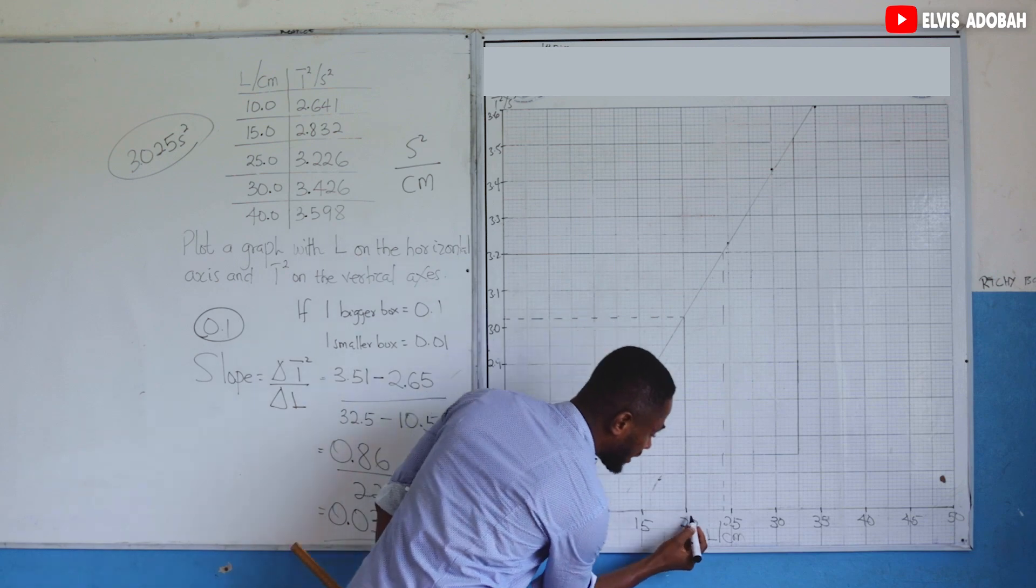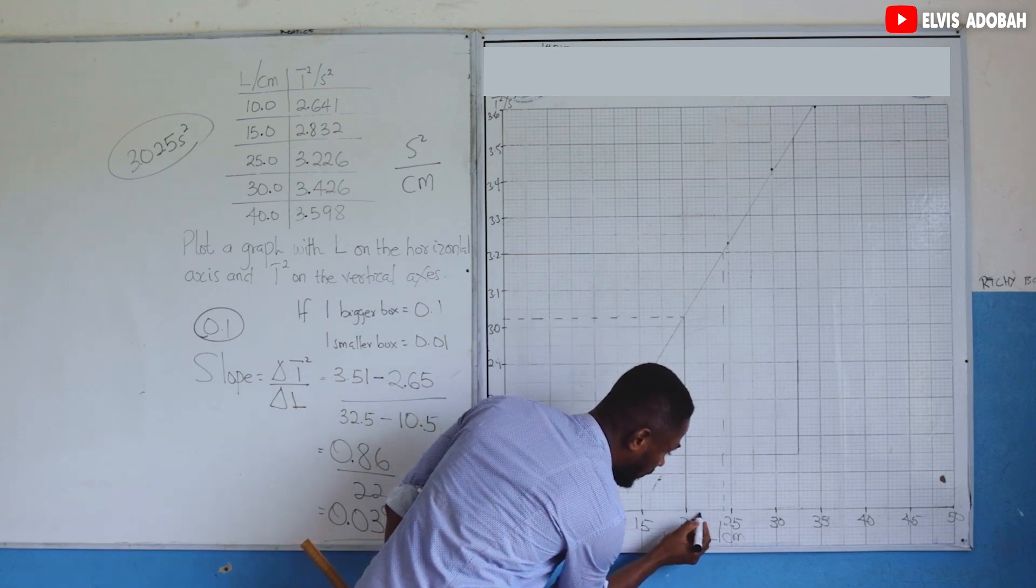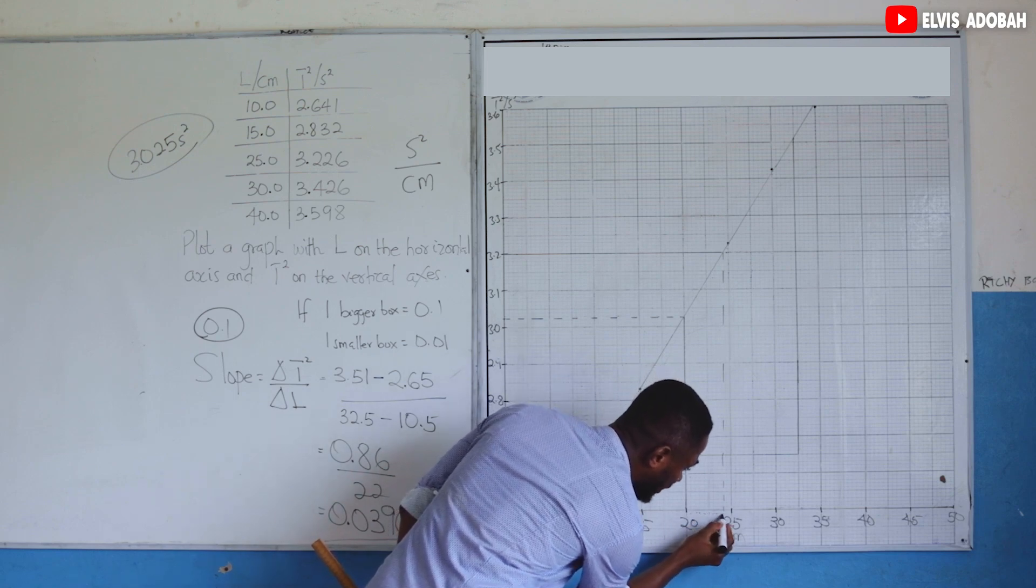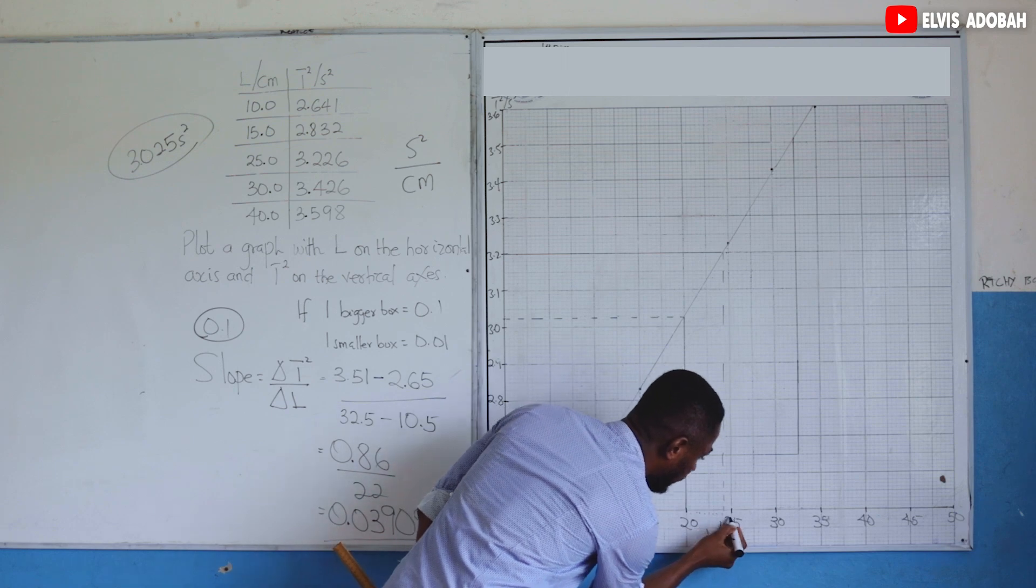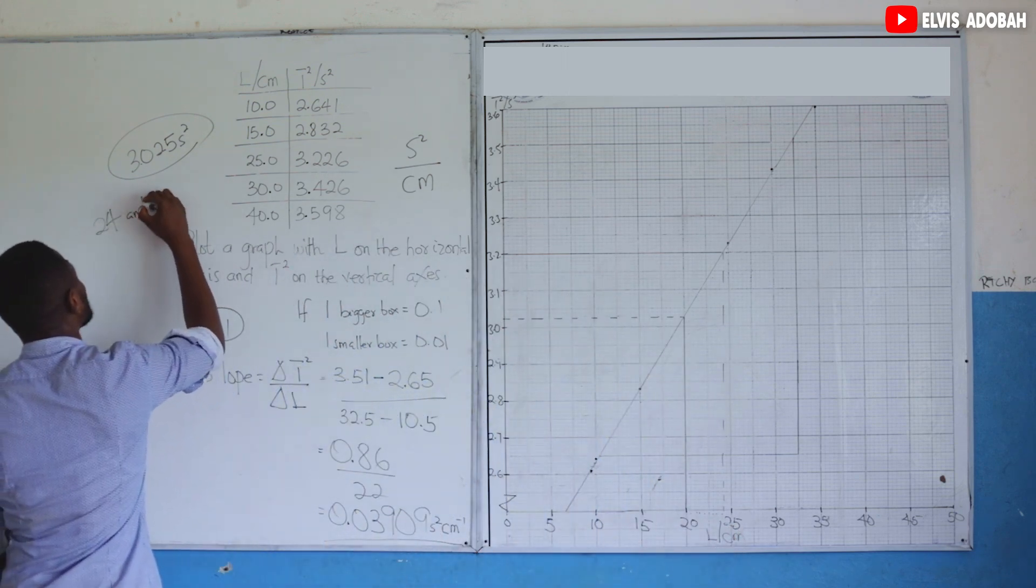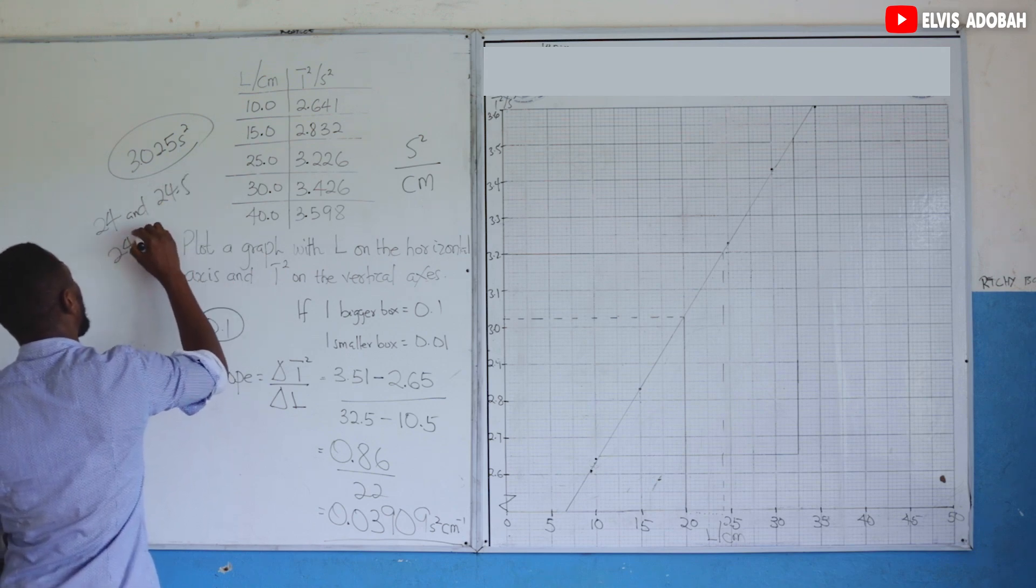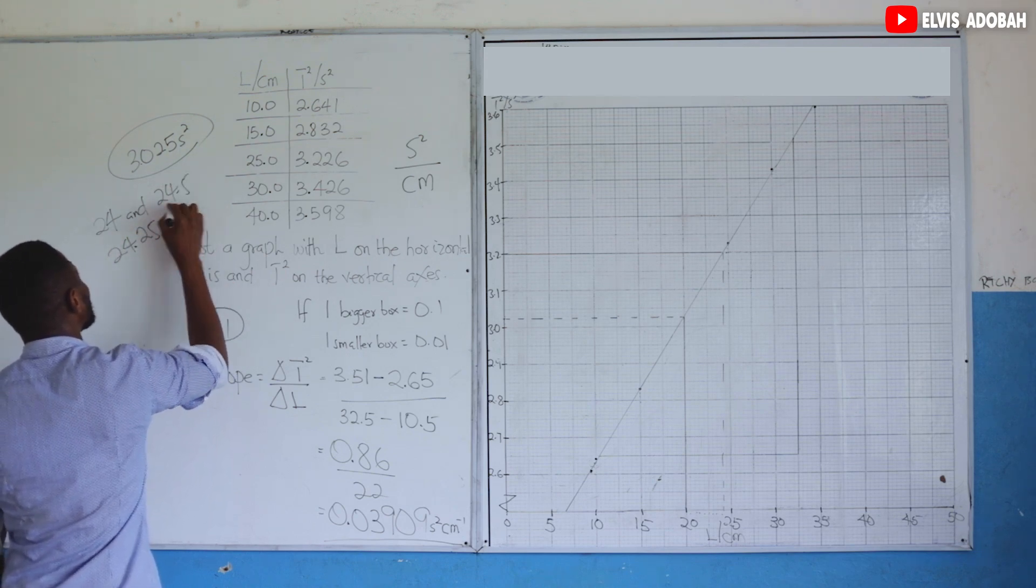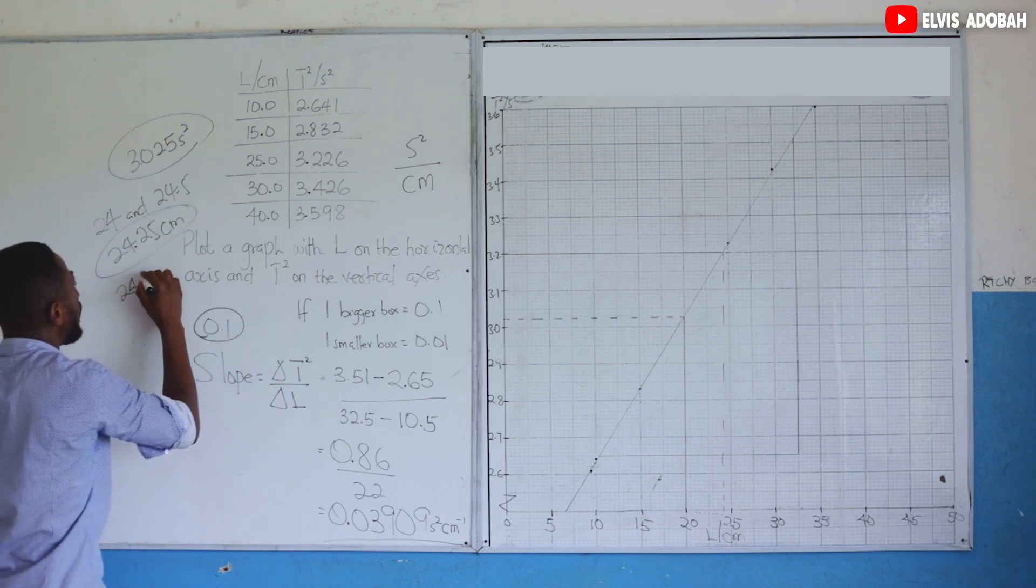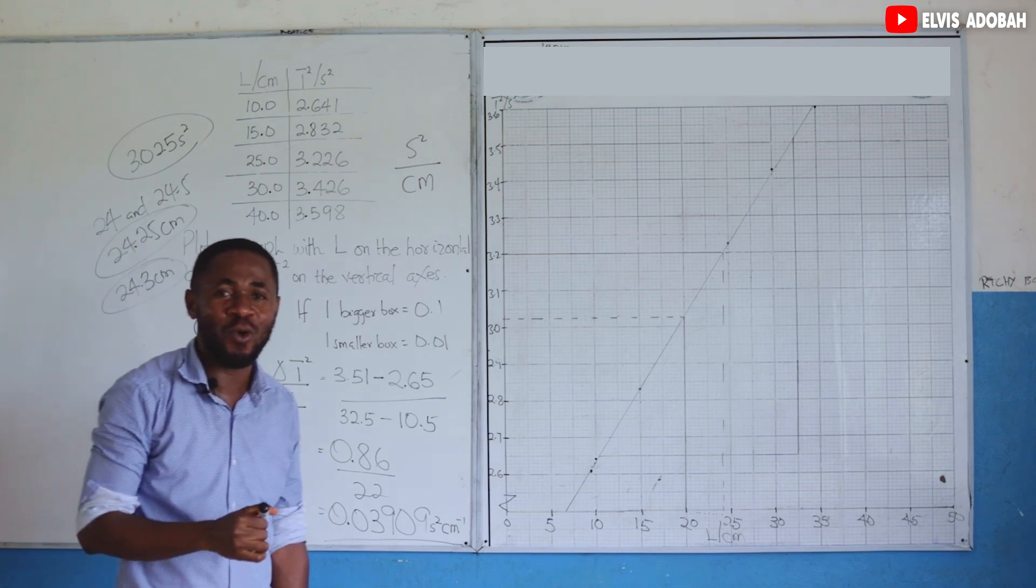Then read its corresponding value on the horizontal axis. This is 20, 20.5, 21, 21.5, 22, 22.5, 23, 23.5, 24, 24.5. So it's between 24 and 24.5. And that will give us 24.25 centimeters. That is approximately 24.3 centimeters. That becomes your value for your length.